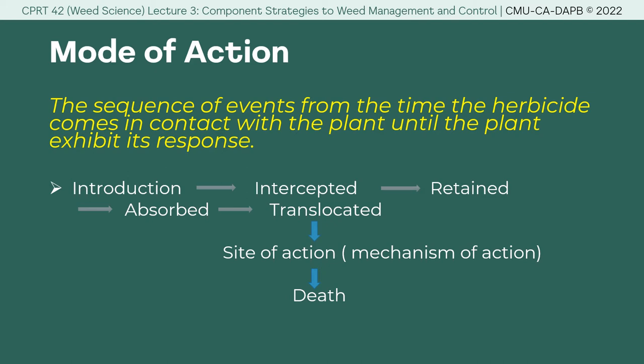What is mode of action? Mode of action is the sequence of events — the entire chain of events from the time the herbicide comes in contact with the plant until the plant exhibits its response. It is the story behind why plants die or survive. There are only two expected responses as far as mode of action is concerned: survival or death.